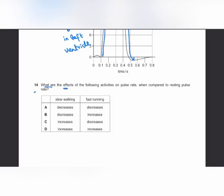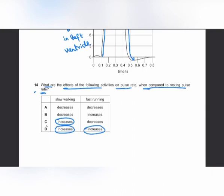MCQ number 14: the effects of activity on pulse rate compared to resting rate. When resting, pulse rate is low. Walking causes a mild increase in pulse rate. Running causes a further increase in pulse or heart rate. The answer is D.